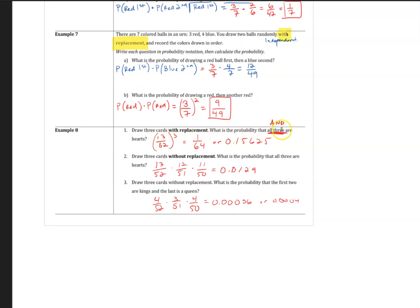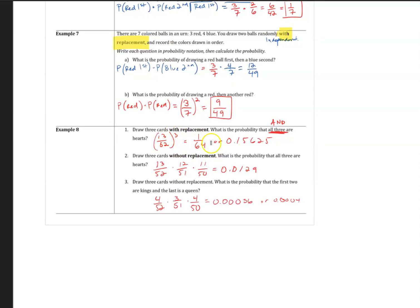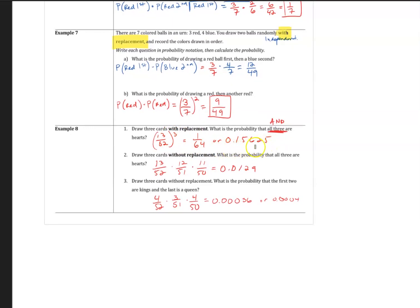Here's the key term with replacement. Draw three cards, so probably all three are hearts with replacement. So 13 out of 52 times 13 out of 52 times 13 out of 52, or you can write it cubed, and you get one out of 64 when you simplify.